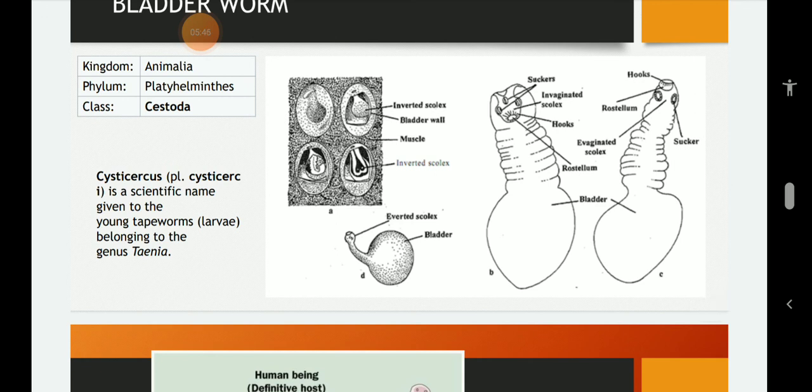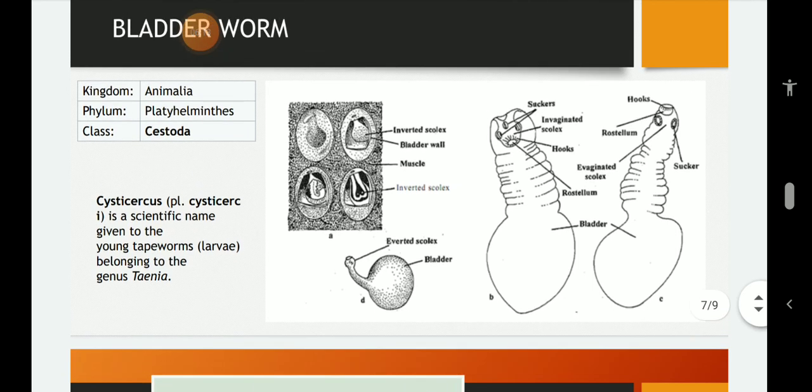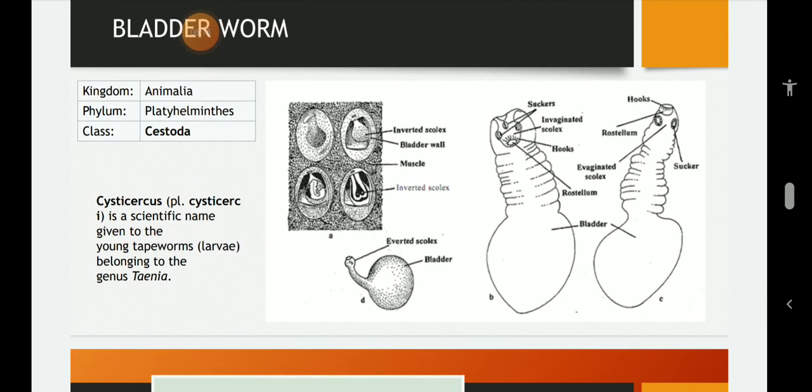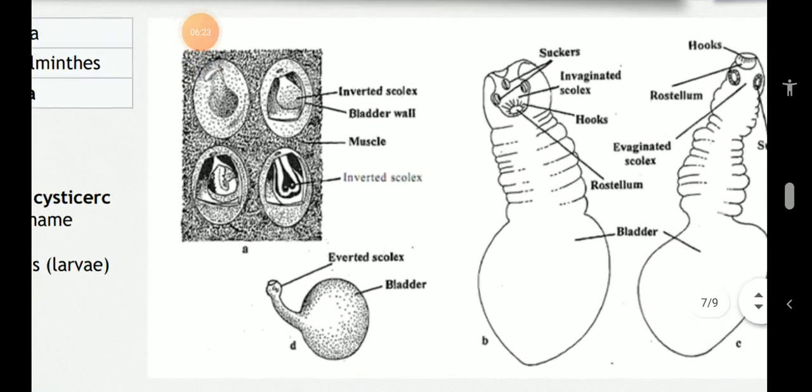onchospheres develop into encysted bladder worm larvae which appear as white spots between muscle fibers in pig. These cysticercus larvae which form as the onchospheres appear whitish in color in the muscle mass. So bladder worm consists of a sac or a bladder like as we see in the structure filled with a fluid containing mostly blood plasma of host and the body consists of an invaginated proscolex measuring 6 to 18 mm in length. It bears suckers, hooks and rostellum as you can see in this picture.